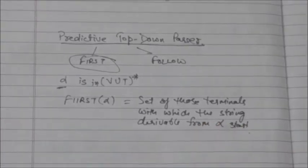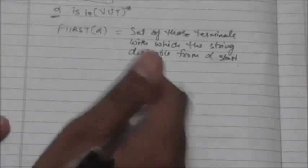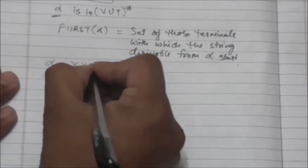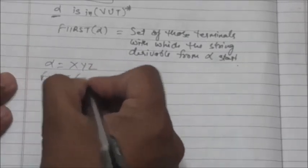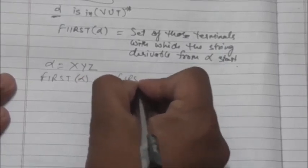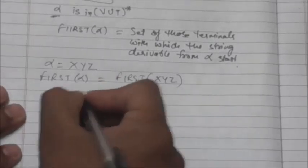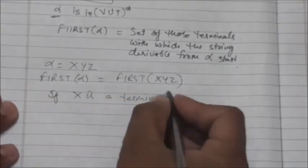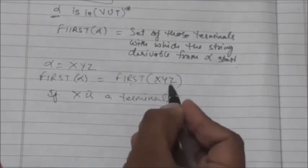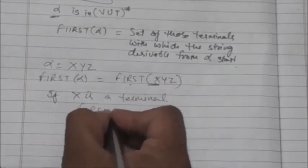So how can we find FIRST of alpha? Suppose alpha is equal to XYZ. Then FIRST of alpha will be equal to FIRST of XYZ. Now, if X is a terminal, then FIRST of alpha, or FIRST of XYZ, will be equal to {X}.